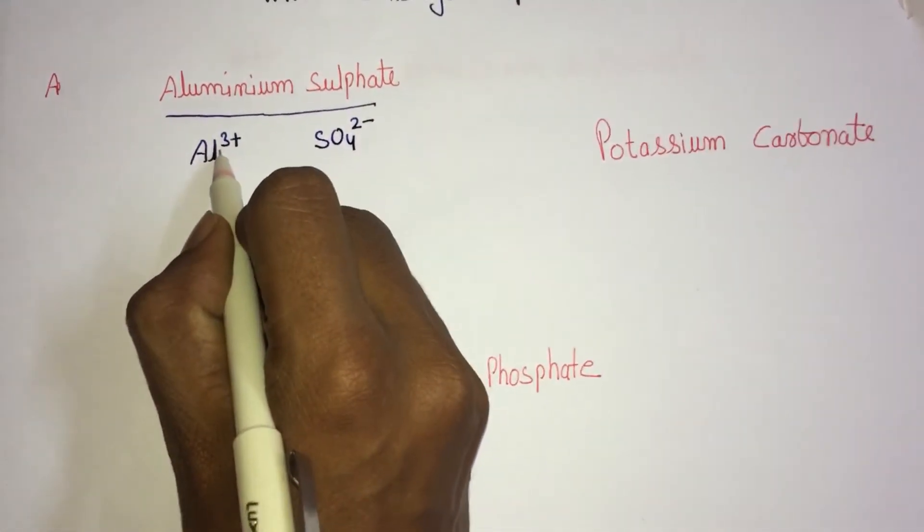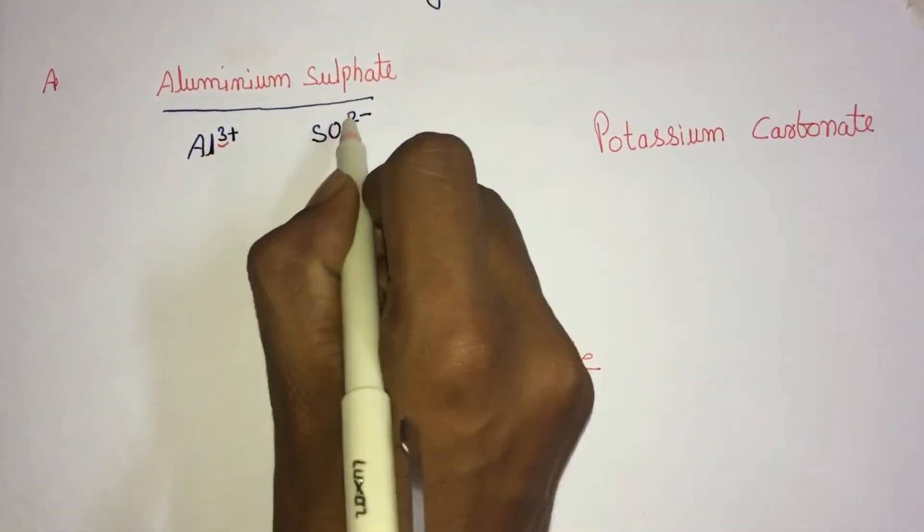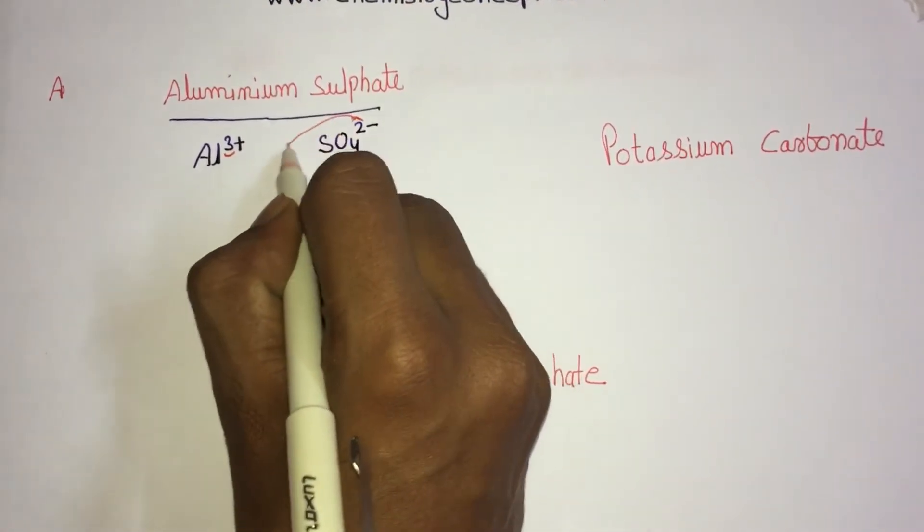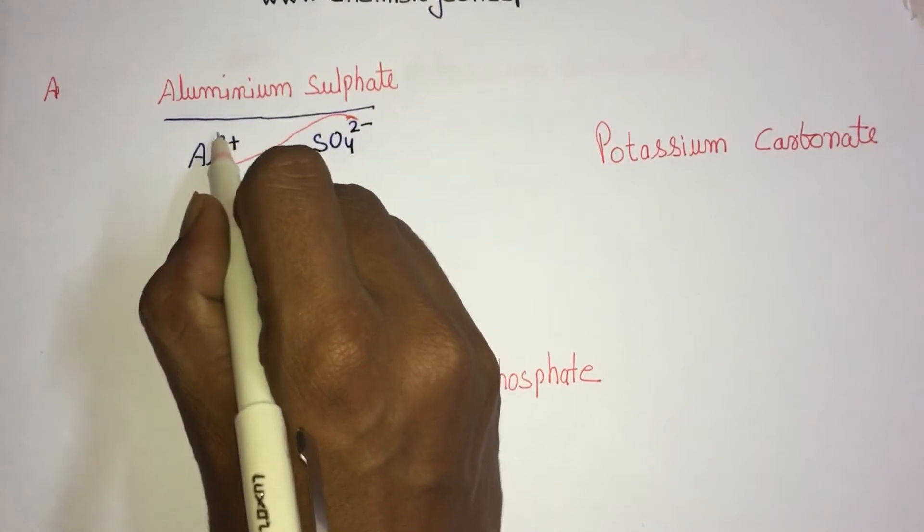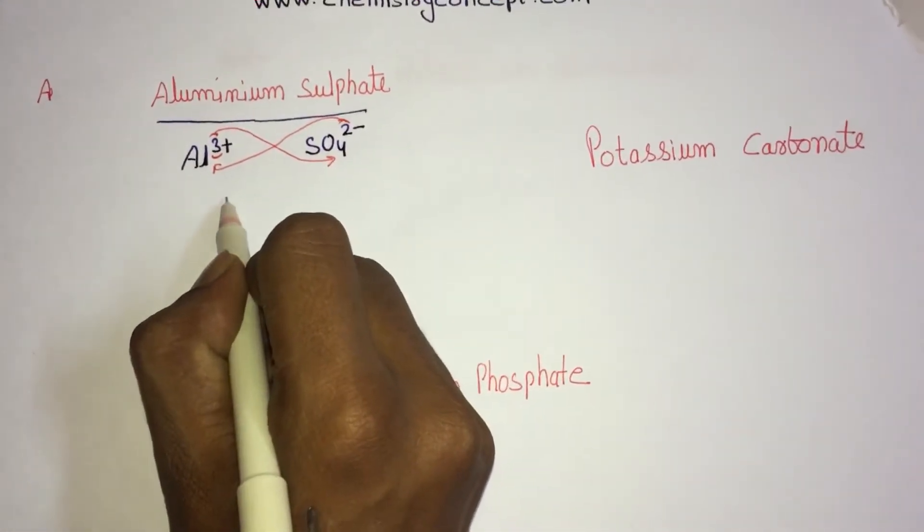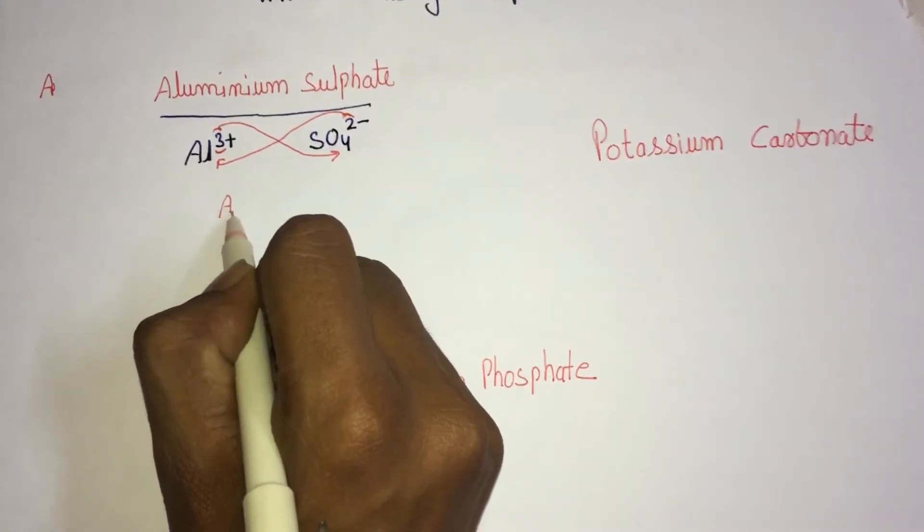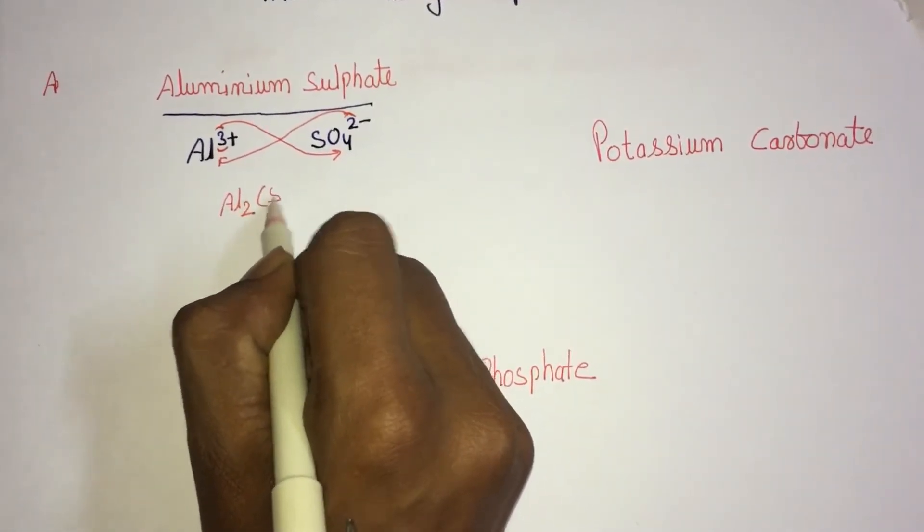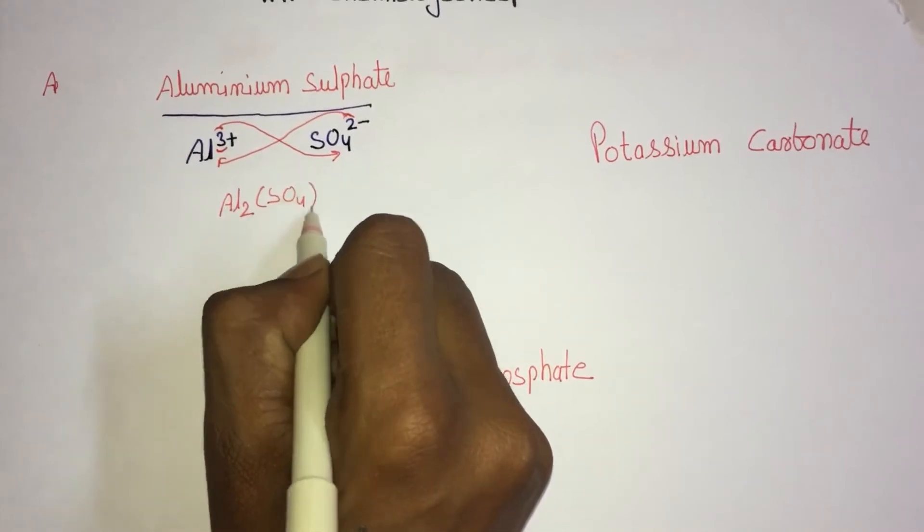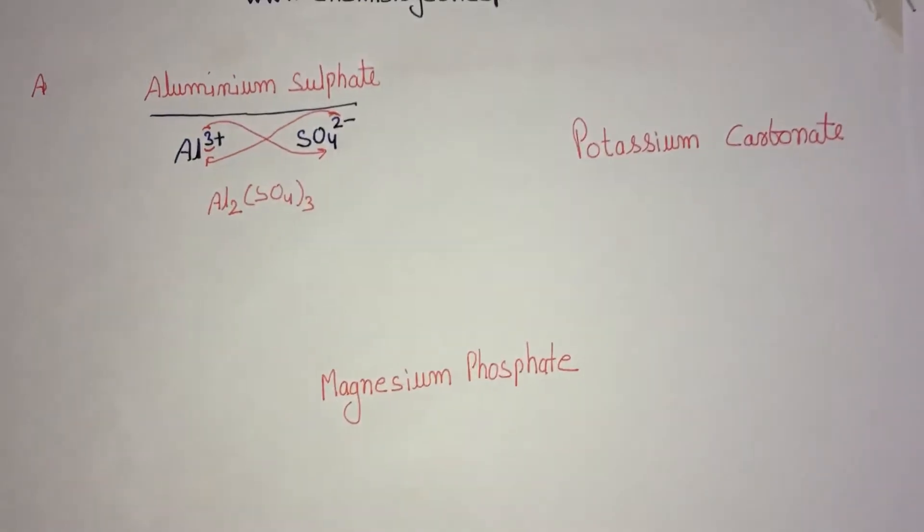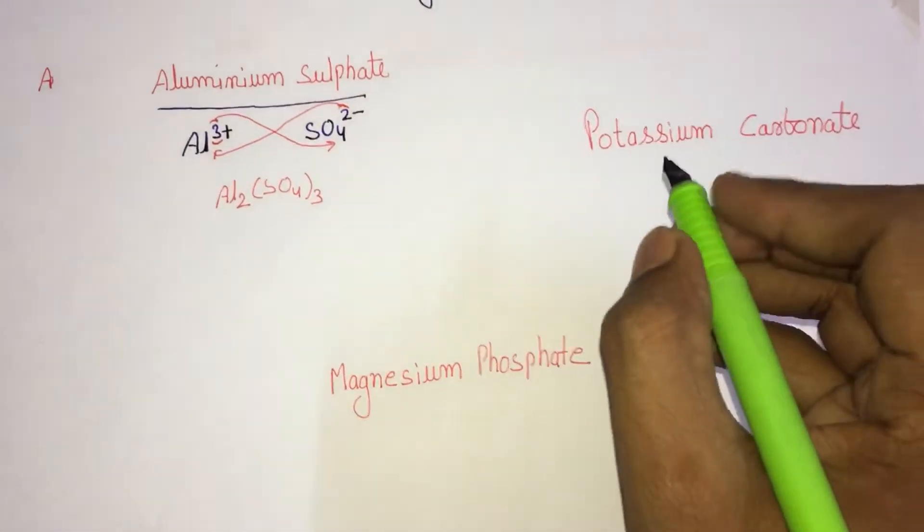The valencies need to be exchanged. Two will go to aluminum and three will go to sulphate, giving the formula Al2(SO4)3, aluminum sulphate.